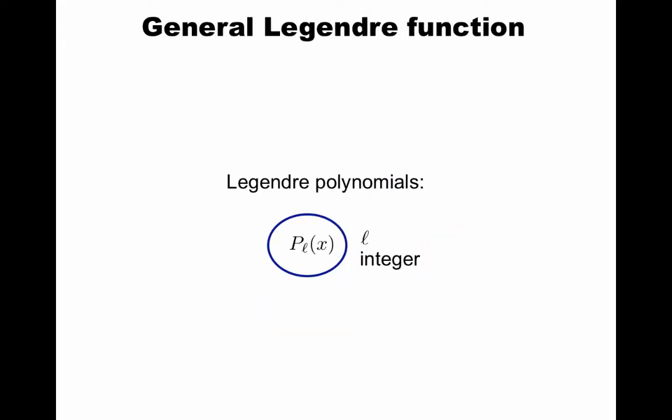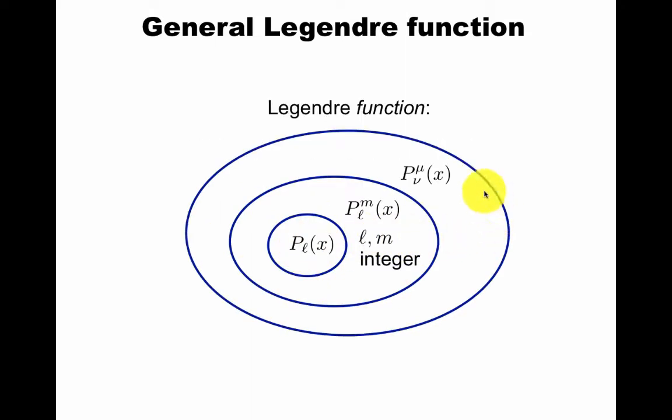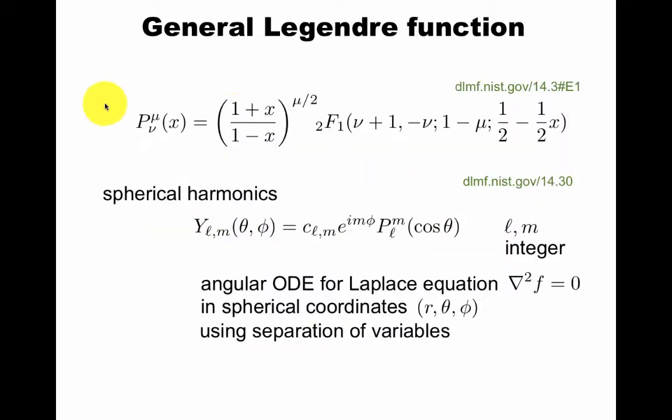And here's another interesting generalization. Legendre polynomials are very important as we discussed earlier. You just have one integer index. You can go to associated Legendre polynomials with two integers, or you can go to the Legendre function that depends on two numbers μ and ν that are not necessarily integers. And this captures a lot more than this original function, which is a special case of this one. And of course, this all falls in the 2F1 bucket. More concretely, here's the relation.